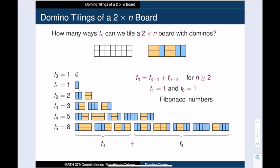And this leads us to a recursive formula for our domino tilings. fₙ is equal to fₙ₋₁ plus fₙ₋₂. This is precisely the Fibonacci recurrence.